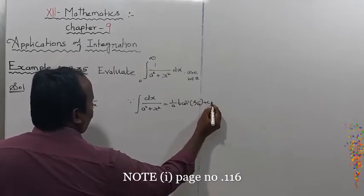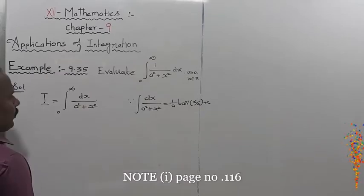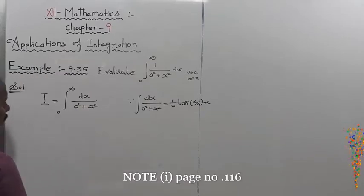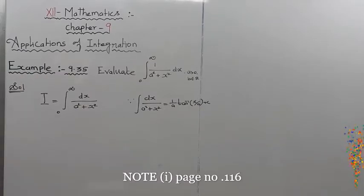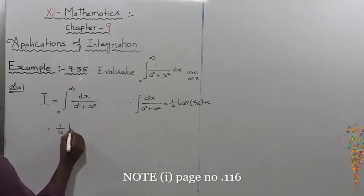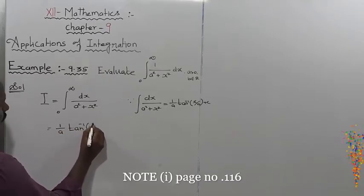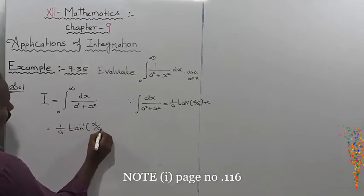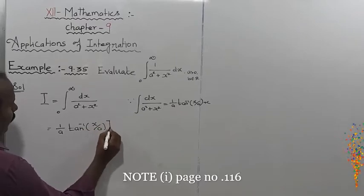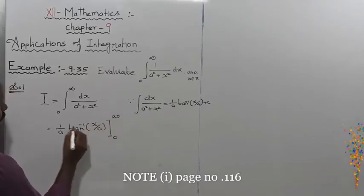So using the form of dx divided by (a squared plus x squared), the result is 1 by a into tan inverse of x by a, with the limit from 0 to infinity.